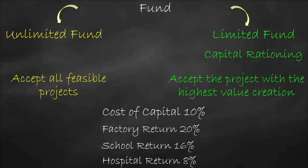With unlimited funds, we have enough to cover all profitable projects, but we only choose profitable ones. As long as the return is bigger than the cost of capital, we do the project. Factory: 20% return > 10% cost of capital — accept. School: 16% > 10% — accept. Hospital: 8% < 10% cost of capital — reject.